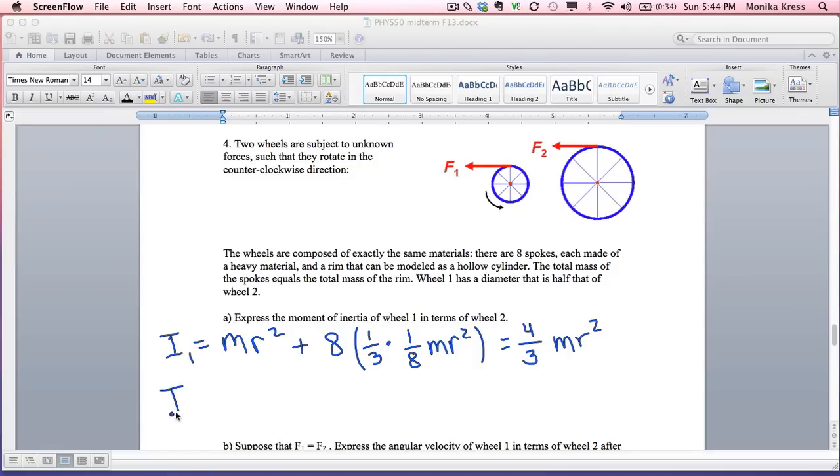We're going to do the same thing for I2 except everywhere you see an m here, you're going to put 2m because each of these spokes is twice as long. This total circumference is twice as big. If you double the radius, you've doubled the circumference. The mass of each spoke is going to be twice the mass, and the mass of the rim is going to be twice the mass. Everywhere you see an m, you're going to write 2m.